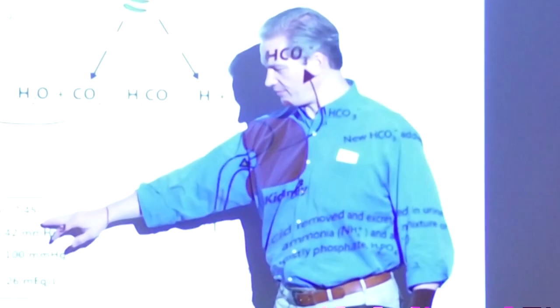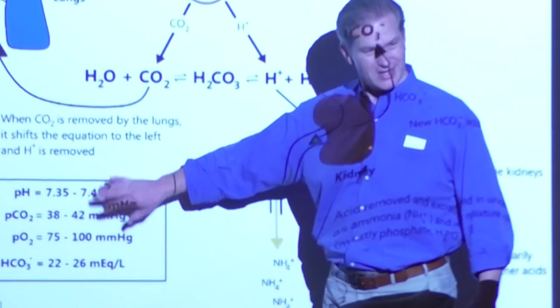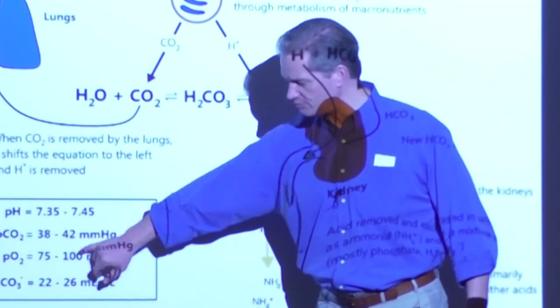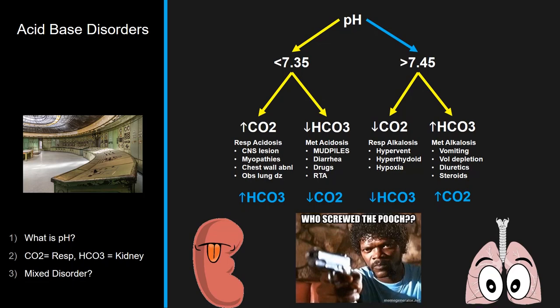Normal pH is between 7.35 and 7.45. PCO2 is between 38 and 42 - these two numbers are the most important. PO2 is between 75 and 100. When you're seeing ER patients, get into their chart and look at laboratory results. If you don't understand a lab result, ask the attending.